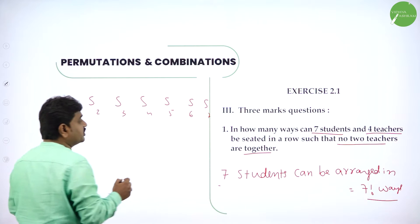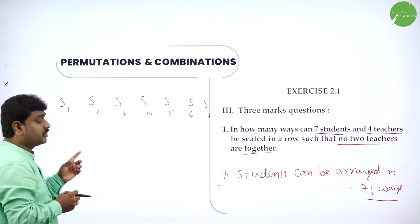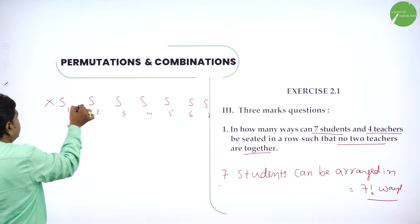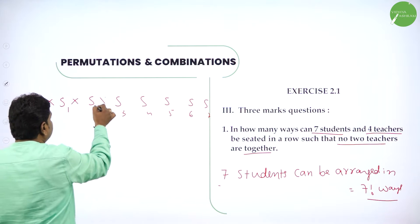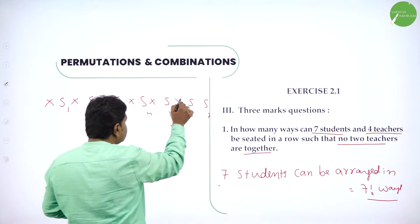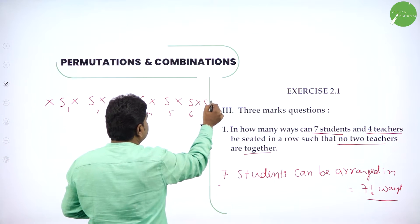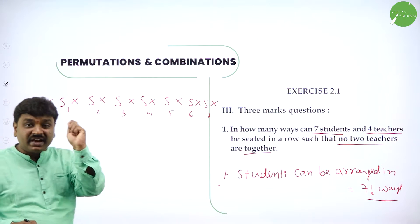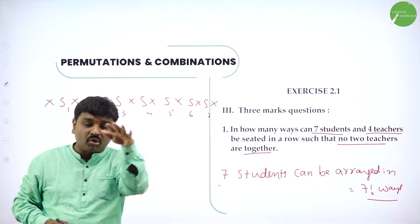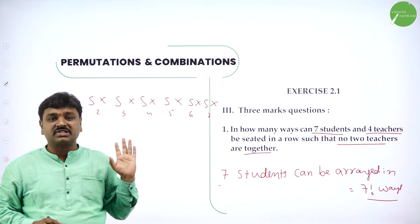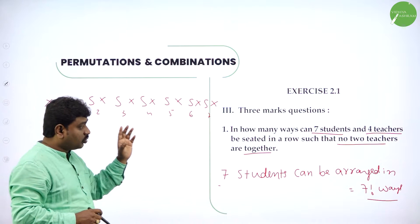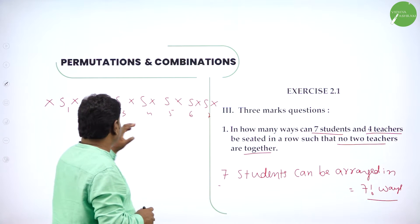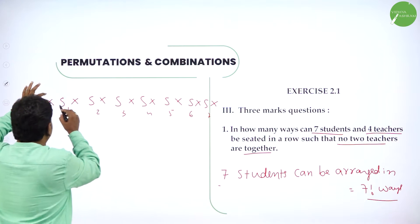For 7 students, there are 8 alternate places: 1st place, 2nd place, 3rd place, 4th, 5th, 6th, 7th, 8th. Now, 7 elements — n elements in a row will have n+1 alternate places. Now I have to make the teachers sit in these alternate places.